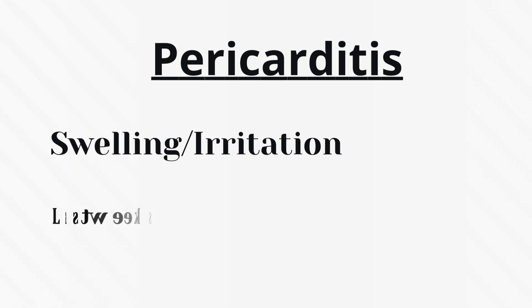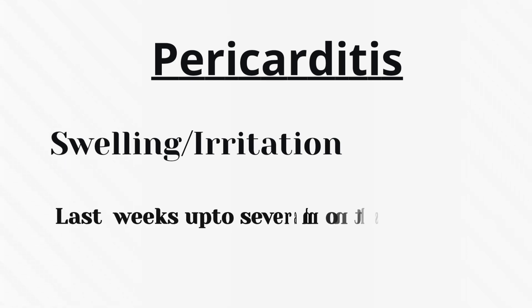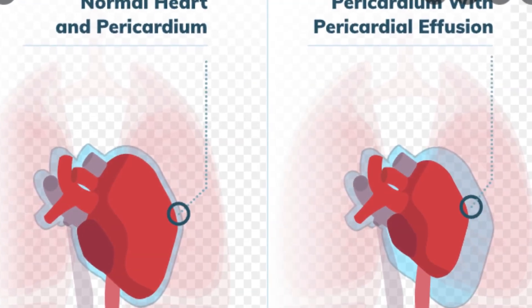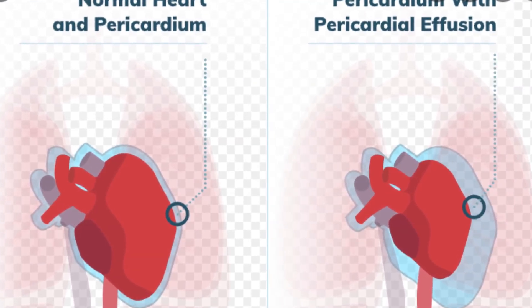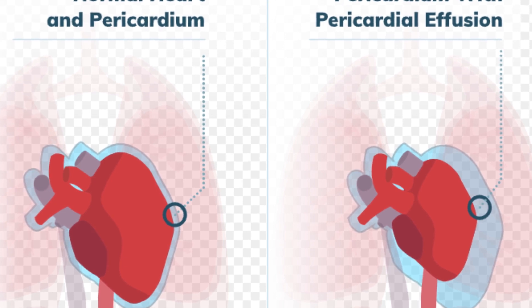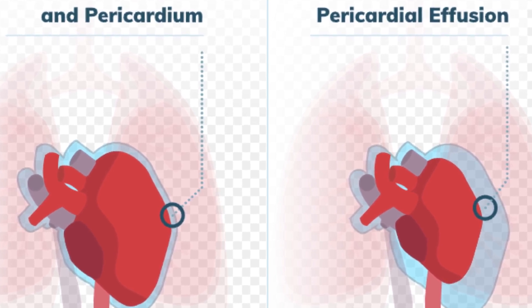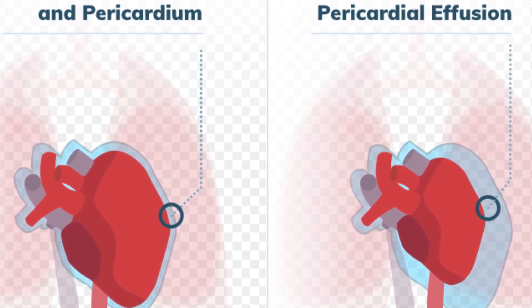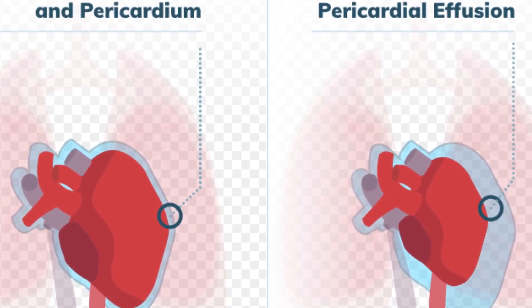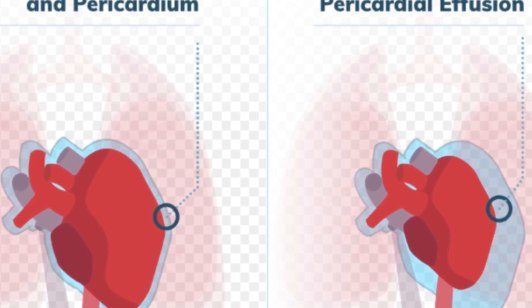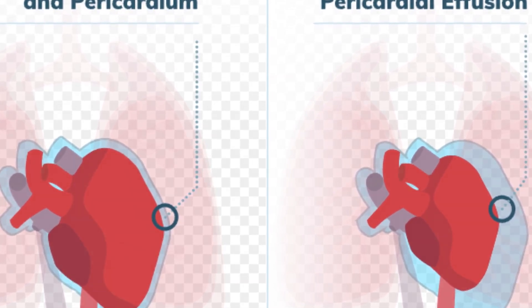Pericarditis usually develops suddenly and may last from weeks up to several months. Sometimes there is extra fluid in the space between the pericardial layers, which is called pericardial effusion.